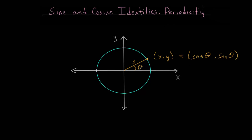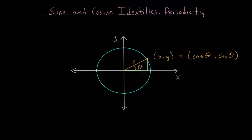What we want to consider with this periodicity is what happens if we add pi over 2 to this angle. We can construct a right triangle where we have a vertical length perpendicular to the x-axis and a horizontal length parallel to the x-axis. The vertical length is the y value — the sine of the angle — and the horizontal is the x value, or the cosine of the angle.